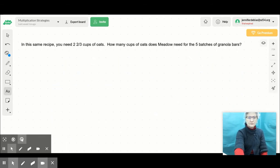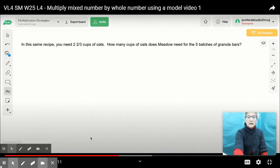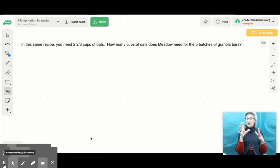Well, Meadow's not done with her granola bars because she still needs the oats. So in this same recipe, you need 2 and 2/3 cups of oats. That's for one batch. How many cups of oats does Meadow need for the 5 batches of granola bars?